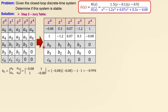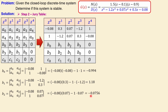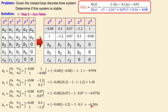For b1, we use the same left column but shift one step to the right for the second column, taking entries a3 and a1. Computing the determinant gives b1 equals 1.80. For b2, we shift one more step to the right, taking a2 and a2, and the determinant gives minus 0.0756. For b3, we shift again, taking a1 and a3, and the result is minus 0.204.